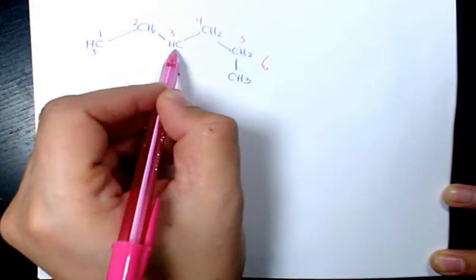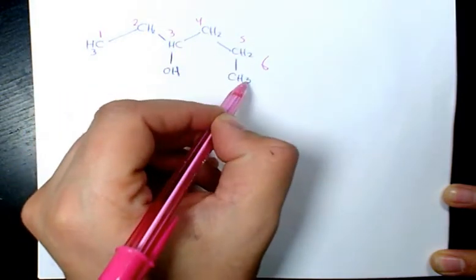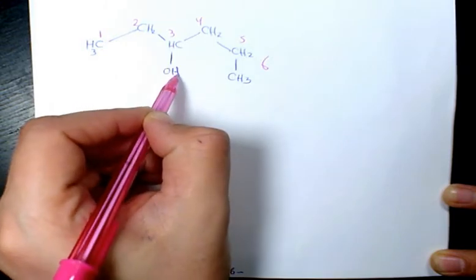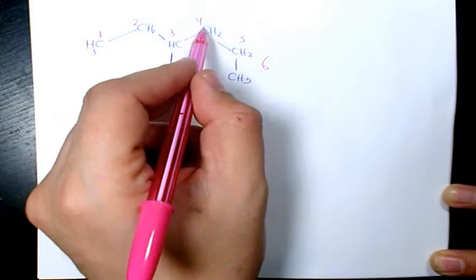four, five, six. So we couldn't start from this side because you'd become one, two, three, four. So we cannot start from this side. So one, two, three - the third one is going to be the hydroxyl group - four, five, six.